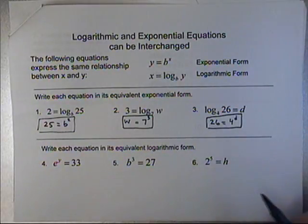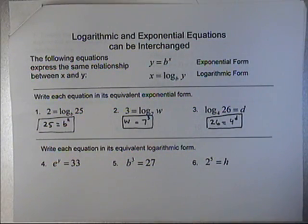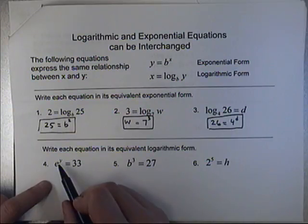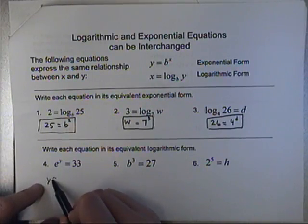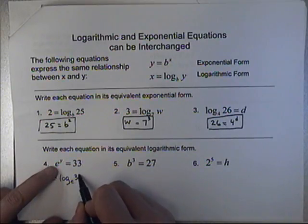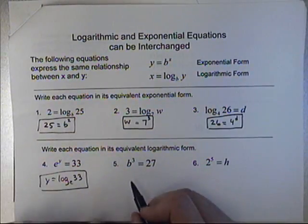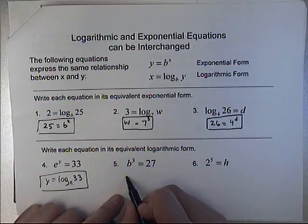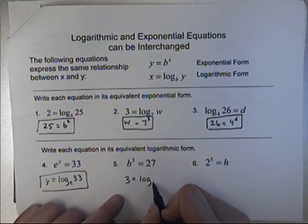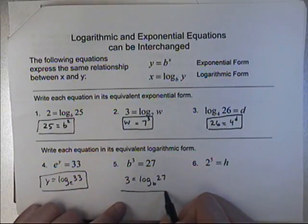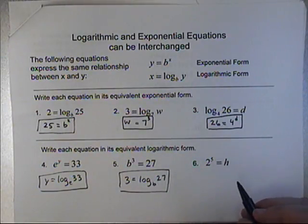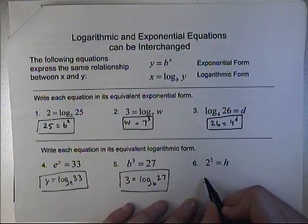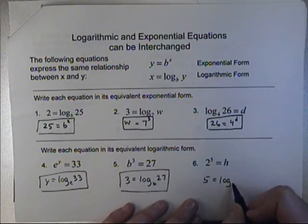So practicing this, and it might take some practice, is really important. Not only going from logarithmic to exponential form, but back again. So if I want to say that I'm solving for the exponent now, this would be y equals log base e of 33. Or this one is, again, we're solving for the exponent. So that would be 3 equals log base b of 27. Or this one would be 5 equals log base 2 of h.